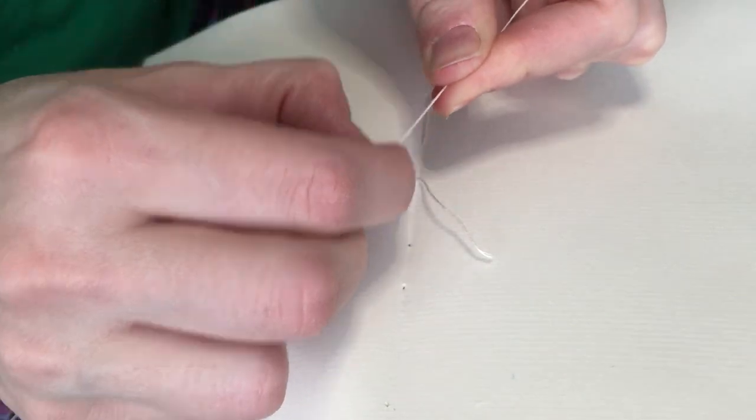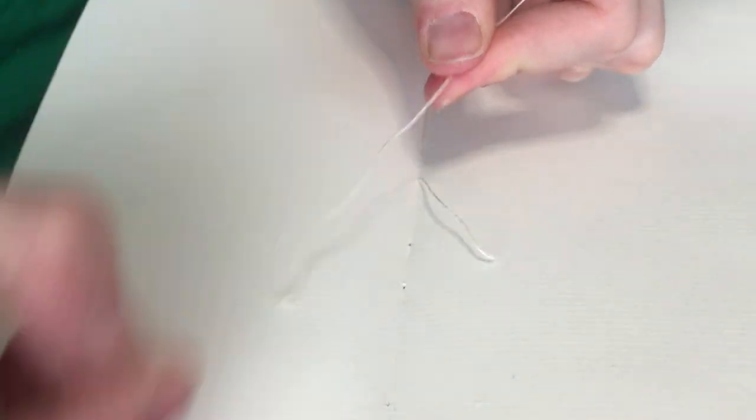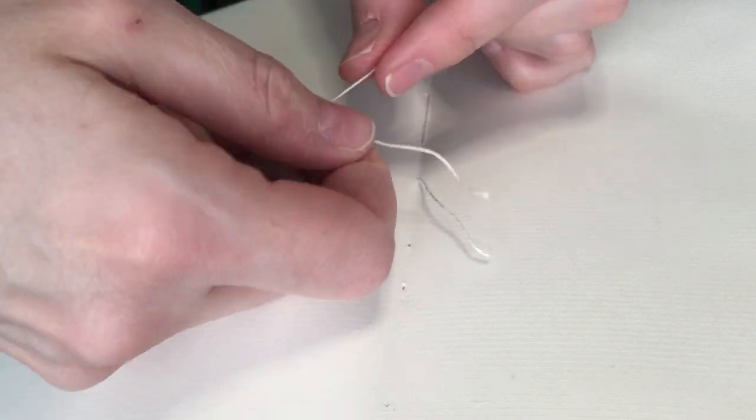First thing I like to do is kind of soften up the tail because this is soft and harder thread is harder to work with.